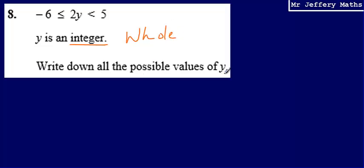Then we're asked to write down all the possible values of y. Now the nicest way to go about doing this is to solve this two-way inequality. And the nicest way to solve a two-way inequality is to split it up into the two parts. So the first part is negative 6 is less than or equal to 2y. We're going to write that out, and then we're going to write out this part of the inequality, 2y is less than 5. So just splitting it down into its two parts.